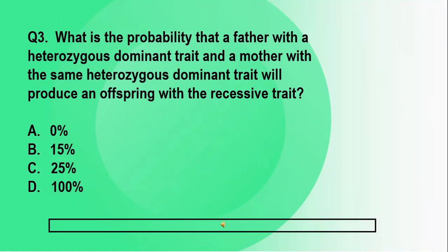Question number three. What is the probability that a father with a heterozygous dominant trait and a mother with the same heterozygous dominant trait will produce an offspring with a recessive trait? A. Zero. B. Fifteen percent. C. Twenty-five percent. And D. One hundred percent.